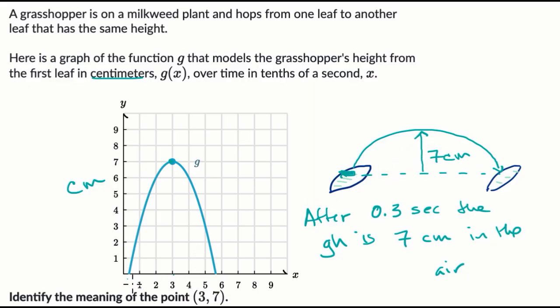Now it's important to keep in mind that this axis is time, not distance. So we actually don't know how far apart these leaves are. We know it took a little under six tenths of a second for the grasshopper to get from here to here, but we know what the height was at any time, and that maximum height was seven centimeters above either of the leaves.